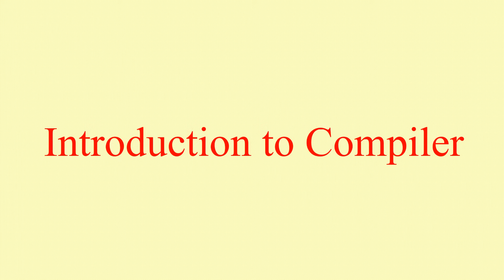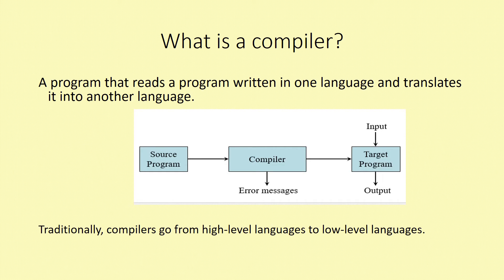A compiler is already a system software. It is a program — a program that reads a program written in one language and translates it to another language. This input is called the source program.